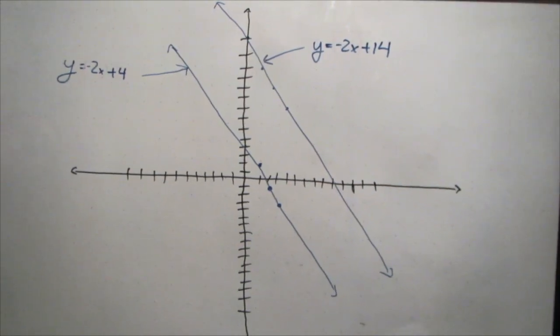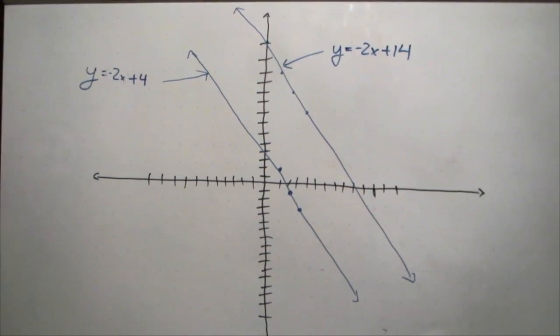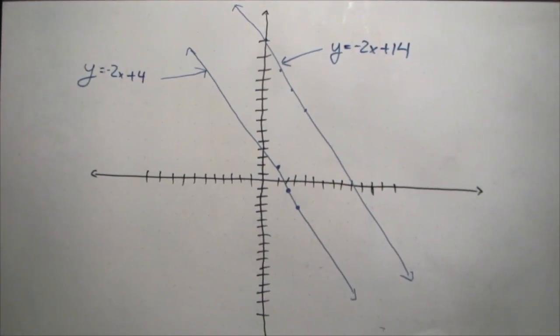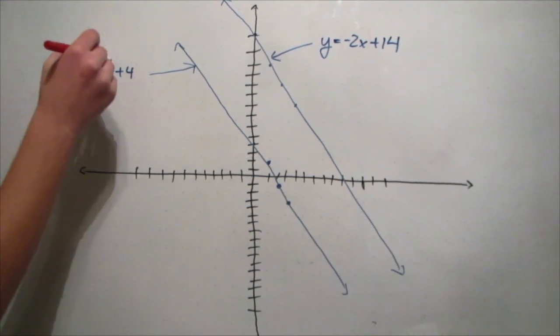A harder problem would be something like y equals negative 2x plus 4 and y equals negative 2x plus 14. Notice how the slopes are the same.